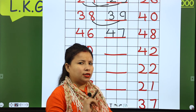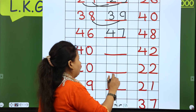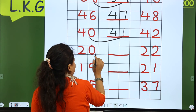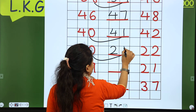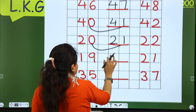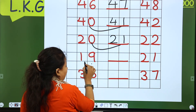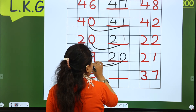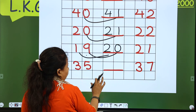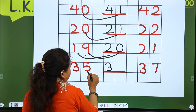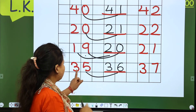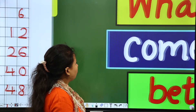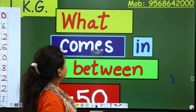Then 40 dash 42 — the next number starts with four and one, so the number in between is 41. Next: 20 dash 22, the number in between is 21 — twenty, twenty-one, twenty-two. Then 19 dash 21 — both numbers change, so 19, 20, 21. And finally, 35 dash 37 — the number in between is 36 — thirty-five, thirty-six, thirty-seven.